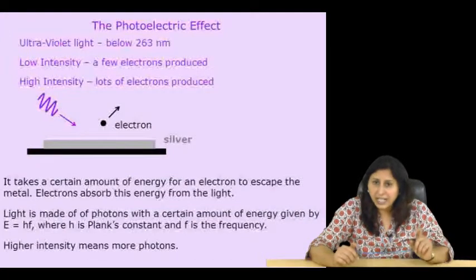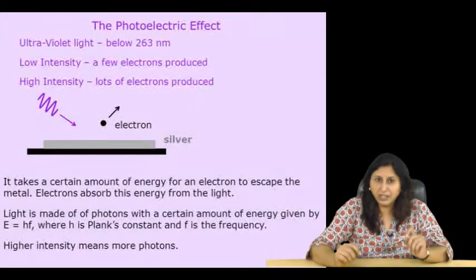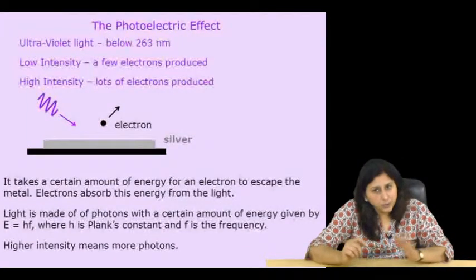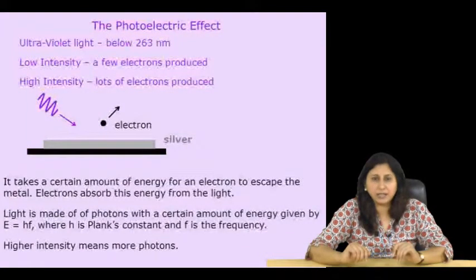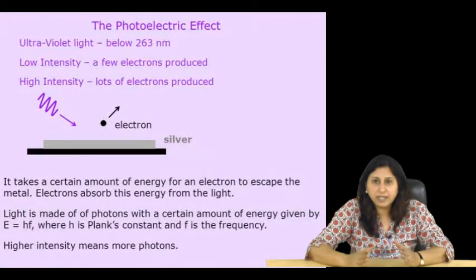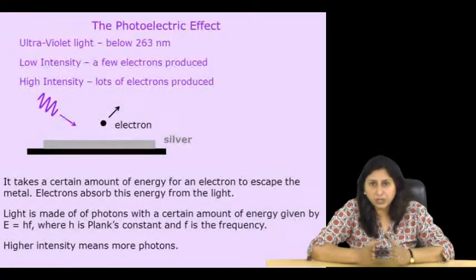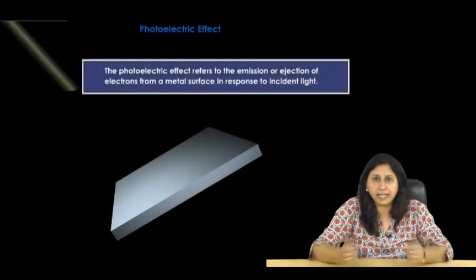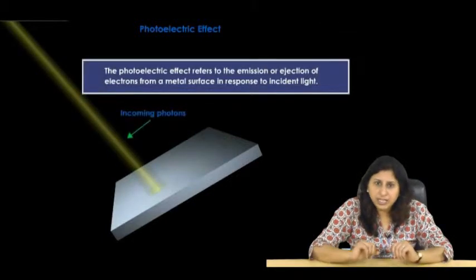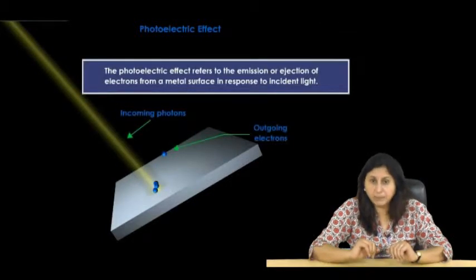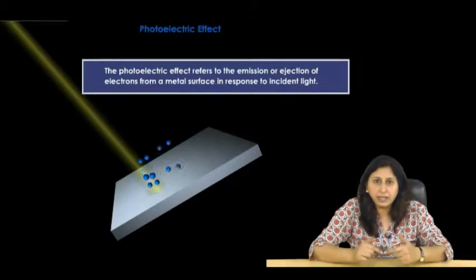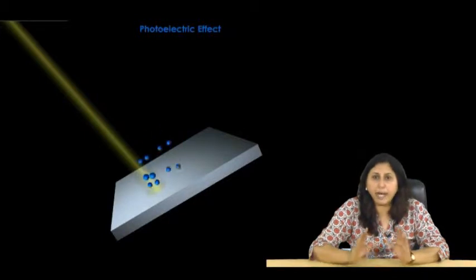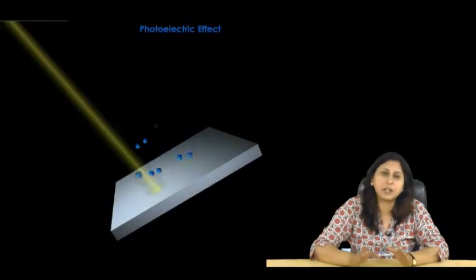Thus, you see that it takes a certain amount of energy for an electron to escape the metal. Electrons absorb this energy from the light. The photoelectric effect refers to the emission or ejection of electrons from a metal surface in response to incident light. Energy contained in the incident light is absorbed by electrons within the metal, giving the electrons sufficient energy to be knocked out of or emitted from the surface of the metal.